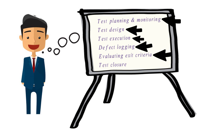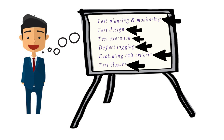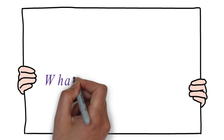The test logs prepared by the testers would be reviewed by the business and the exit criteria would be evaluated. If the exit criteria is met, then test closure activities would be started. The test closure document would be prepared and the learnings from the project would be documented. These are the fundamental test process steps. To successfully complete the project, a strategy, an approach, and a plan are required.